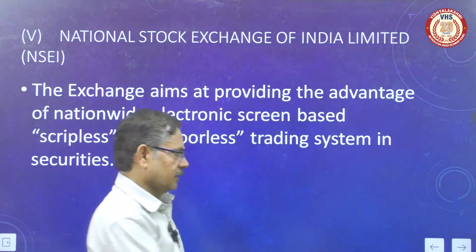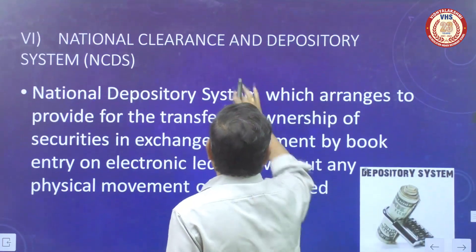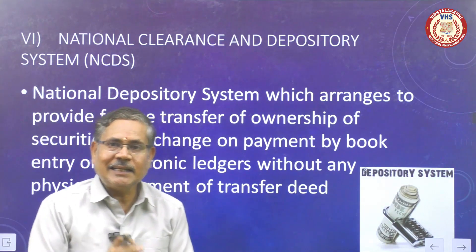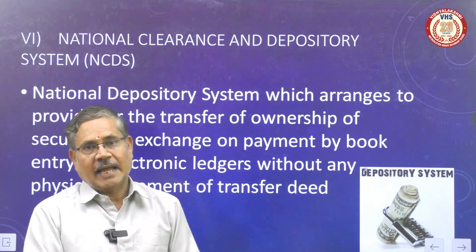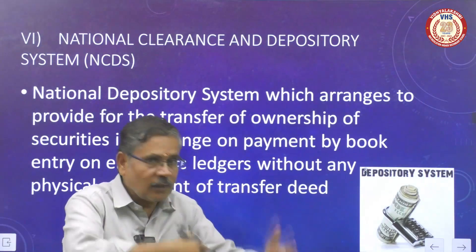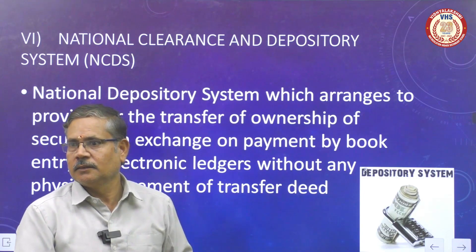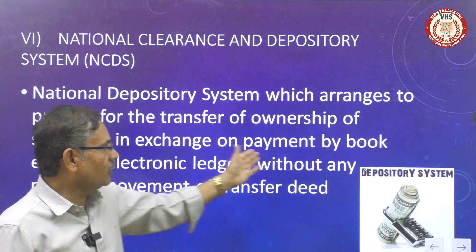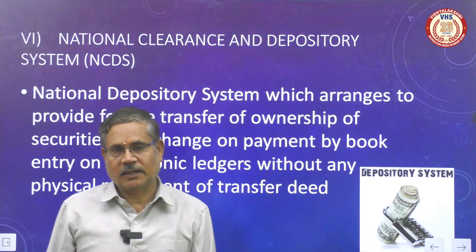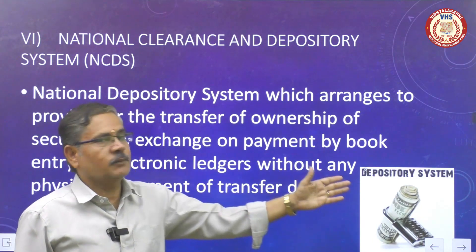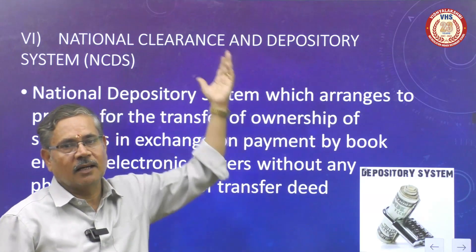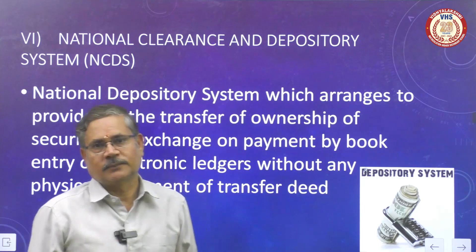This is the NCDS — National Clearance and Depository System. Clearing means that all buying and selling transactions are cleared. The national depository system arranges to provide the transfer of ownership — from one person to another — for buying and selling of securities. Payment is done by book entry to electronic ledgers without any physical movement. Everything is handled electronically through a screen, and the buying and selling dealings are managed via NCDS — National Clearance Depository System.